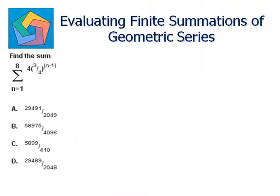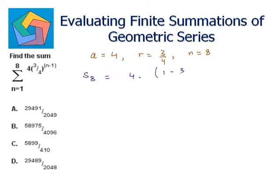Next problem: find the sum, summation n going from 1 till 8 of 4 times (3 over 4) raised to the power n minus 1. Comparing with the general term, A is 4, R is 3 over 4, and n is 8. So putting in the formula, S_8 will be 4 times (1 minus (3/4) raised to the power 8) over (1 minus 3/4).